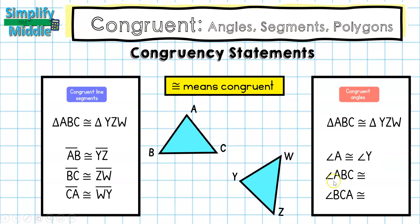Here I have the measure of angle ABC. Remember this can be written three ways: the measure of angle B, or the measure of angle CBA — all referring to angle B since it's in the middle. Angle B is in the second position, so it's congruent to the measure of angle Z. The last one, angle BCA or angle ACB or just angle C, is in the last position, so the measure of angle W matches with this.